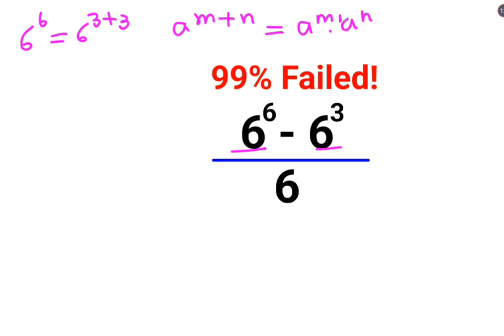So instead of 6 raised to 6, we can write this as 6 raised to 3 multiplied by 6 raised to 3 minus 6 raised to 3. Here also there is 6 raised to 3 divided by 6 raised to 3, so we can take 6 raised to 3 common.